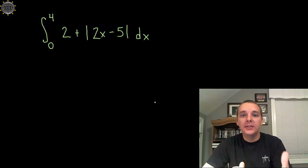In this exercise we're being asked to compute this definite integral of 2 plus the absolute value of 2x minus 5 on the interval from 0 to 4.